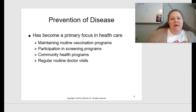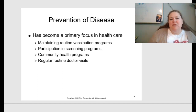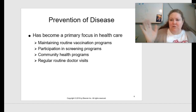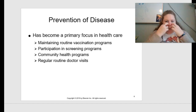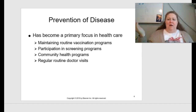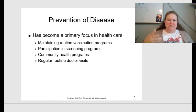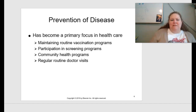We also want to talk about how to prevent diseases, which has become a primary focus in healthcare. We want to maintain routine vaccination programs — for measles, rubella, and the ones you get as a child. Participating in health screening programs is important; for example, bone screening for older patients. Community health programs — like a farmer's market health booth offering healthy recipes and exercises — and routine doctor visits help us catch things quickly and maintain a standard of health.